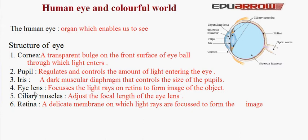5. Ciliary muscles. These are the ciliary muscles. They adjust the focal length of the eye lens so that we can see objects at different distances.